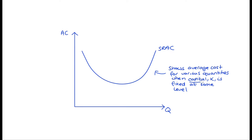What we don't usually explicitly say is that depictions of individual short-run average cost curves really just show one of many possible short-run average cost curves. There are lots of different levels of capital that a firm could hold — in fact, there is a theoretical short-run average cost curve associated with every possible level of capital that a firm could have.